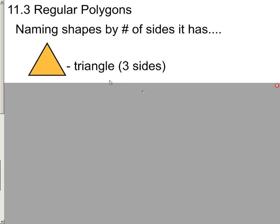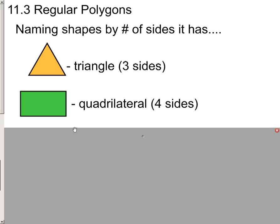Looking at the very first one, the smallest one would be a triangle. The next one would be a quadrilateral.